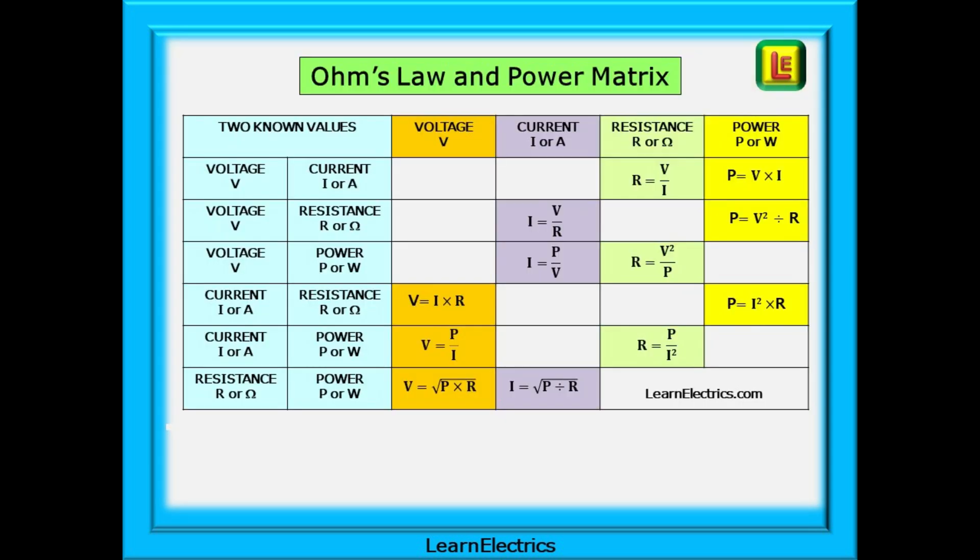And of course they all have worked answers as well. This is the power matrix. So how does it work? And we will leave a link in the description to this video that will take you to the printable PDF of this matrix. Look at the leftmost two columns. These are the two values that we do know. Find the correct pairing, the two that you know, and then look along that row to locate the two calculations that are needed to find the two unknown values.